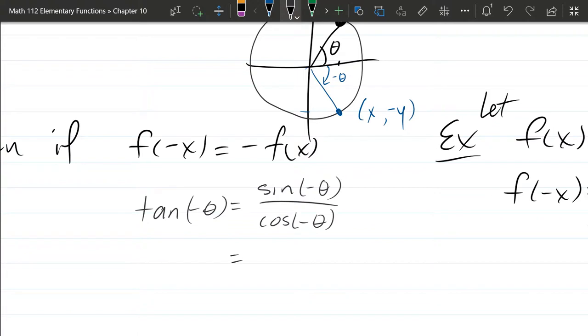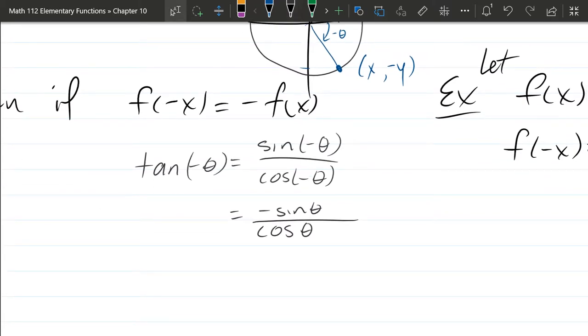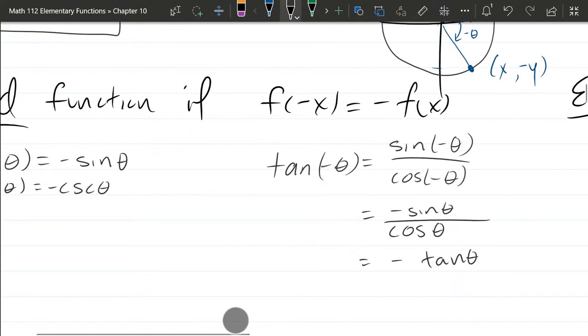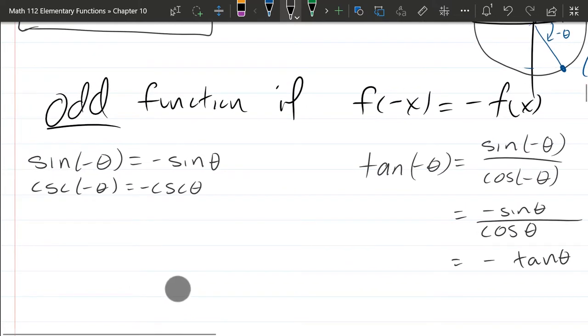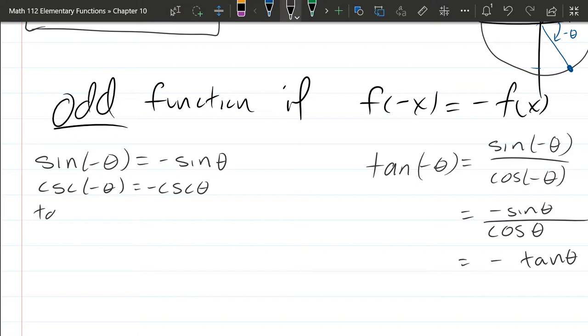So sine is odd, which means I can take this negative and drag it in front. So we have negative sine theta. Cosine theta is even, so I can just erase that negative sign. So that's just cosine theta. So now all we have is sine over cosine with a negative. So it's negative tangent theta. So tangent is odd because it's an odd function divided by an even function. It turns out to be odd.